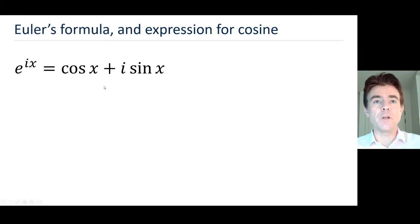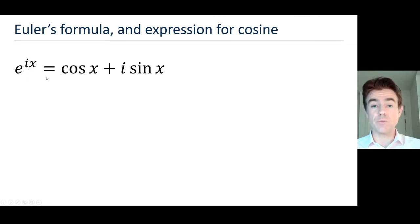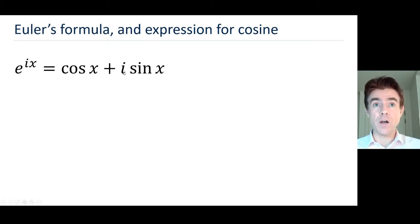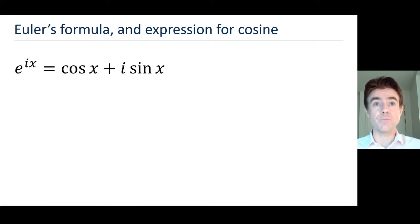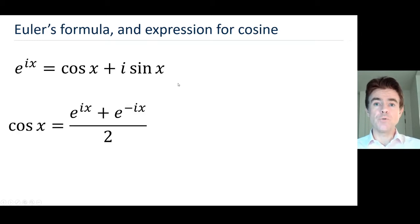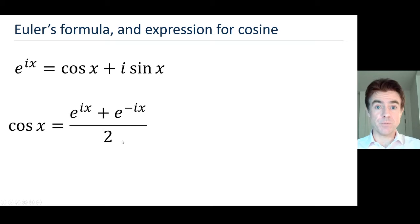This is Euler's formula. This is a complex exponential on the left-hand side, e to the ix, and we'll see it on an Argand diagram in a moment. It's given by the real part, cos x, plus i — i being the square root of minus 1, often also written as j — times sine x, where sine x is referred to as the imaginary part. So the expression is: cos x equals e to the ix plus e to the minus ix, divided by 2.